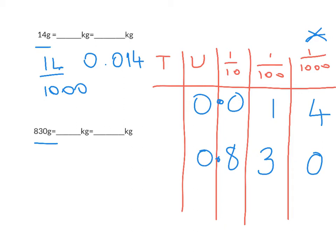So that's going to be 830 over a thousand, or 0.830.